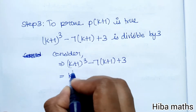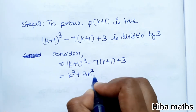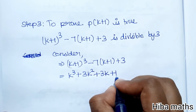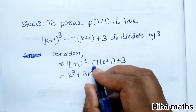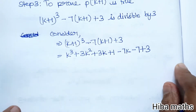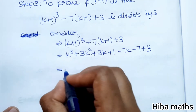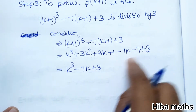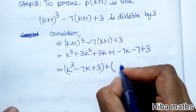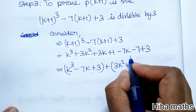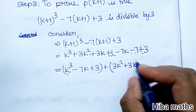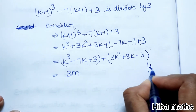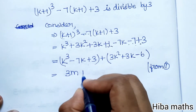Expand (k+1) cubed using the formula: a cubed plus 3a squared b plus 3ab squared plus b cubed, where b equals 1. This gives k cubed plus 3k squared plus 3k plus 1 minus 7k minus 7 plus 3. Grouping terms, we get 3m plus 3k squared minus 6 from the full expression, which contains the factor 3.